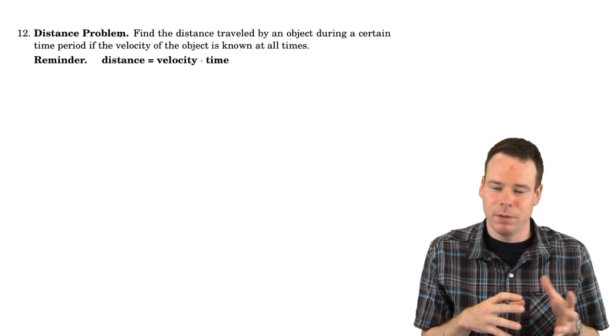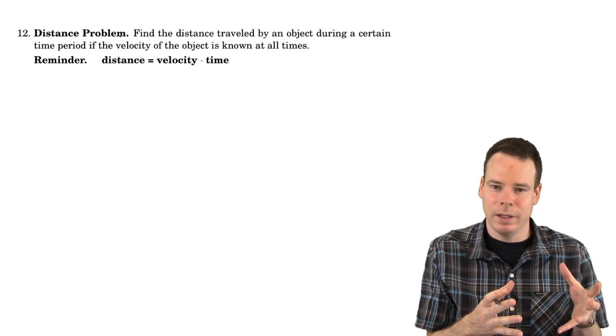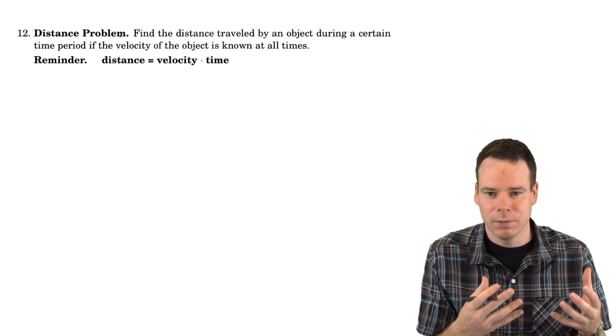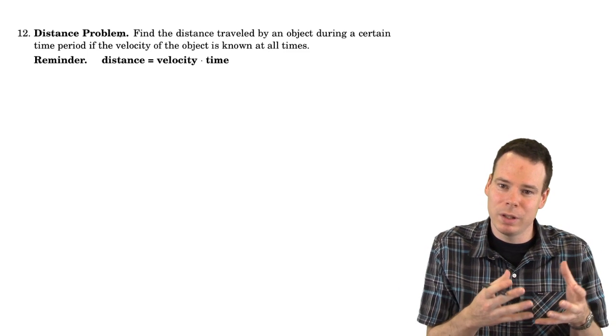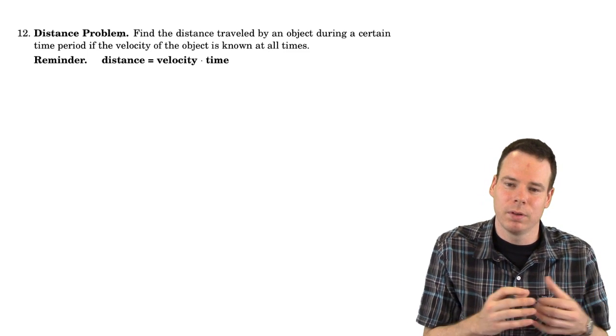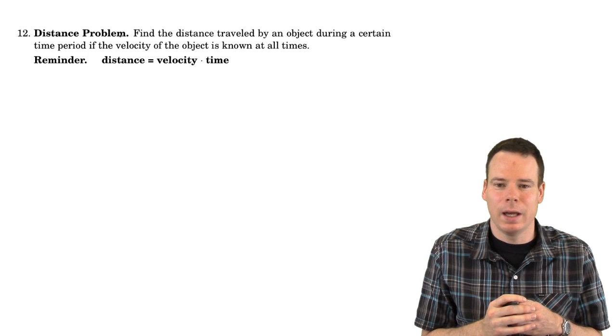In Calculus 1 we looked at the velocity problem. If I know the position of a particle at any given time, can I find its velocity? That turned out to be yes, we can. It's the slope of the tangent line or the derivative of the position function at a particular time.